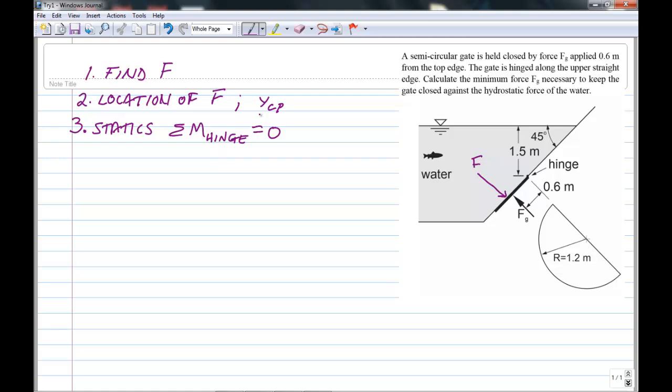So starting with step one, we have, and in this case, we can assume that the atmospheric pressure here acts on both sides. So we can use the gauge pressure variance of these equations. And so the force on the gate is strictly due to the weight of the water, which we showed was the gamma of the water, the height of the center of gravity or the center of area of the gate, and times the area of the gate.